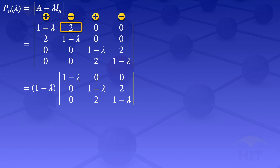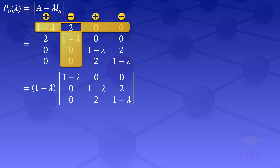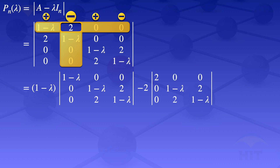Moving to the next element in that row, the 2. The 2 is sitting on a negative position. I close the row and column containing the 2, so it will be minus 2 multiplied by the determinant of the uncovered elements: 2, 0, 0; 0, 1 minus lambda, 2; 2, 1 minus lambda. The other elements in that row are zeros, so there is no need to expand further — it's just plus 0, minus 0.